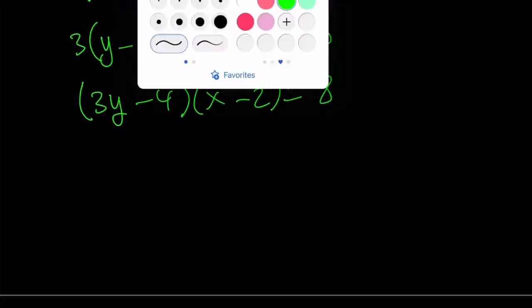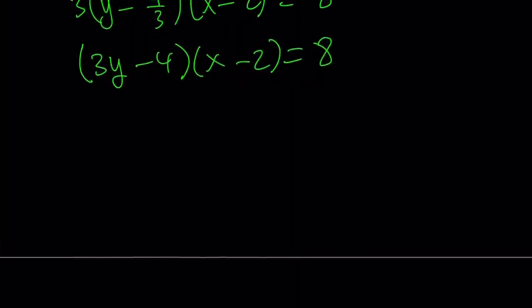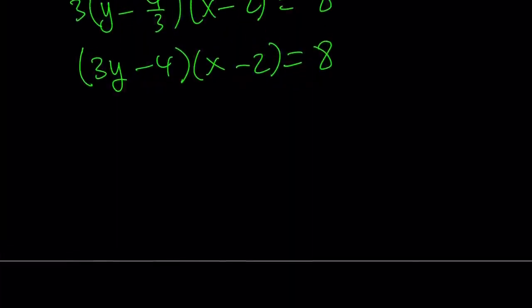Now, in this equation, our goal is to find factors of 8 because x and y are integers. So if x is an integer, x minus 2 is an integer. Therefore, that needs to be a divisor of 8 or a factor of 8. And 8 is 2 to the third power so it has 4 positive and 4 negative factors. And those are 1, 2, 4, and 8 with the plus minus signs. Like this. So there's 8 factors.